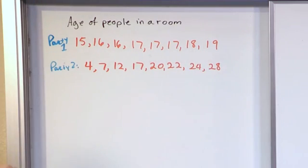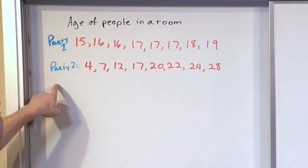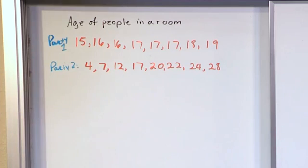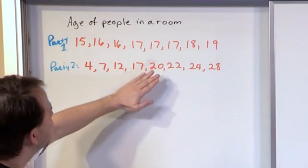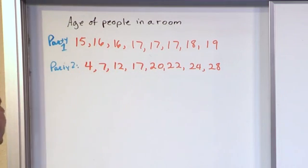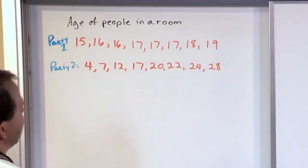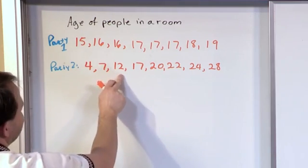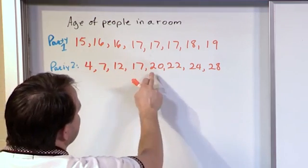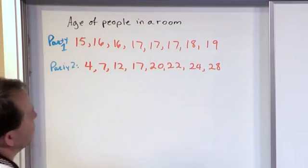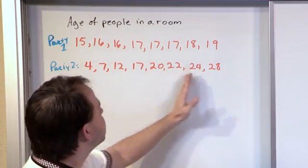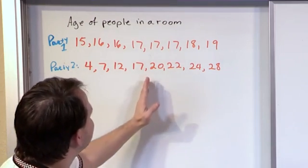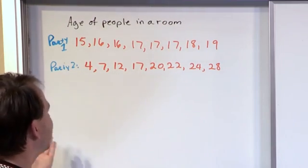Which one of these data sets from party one or party two is more spread out? Notice I have eight different people in each one. To me it looks like number two is much more spread out because I have a much wider range of people attending that party. I have some kids, some very young preteens, a teenager, some early 20-year-olds, and some people in their upper 20s. If I had to calculate the mean of party number two, I'm just eyeballing it, the mean is probably going to be somewhere around 20 years old or 19 years old.